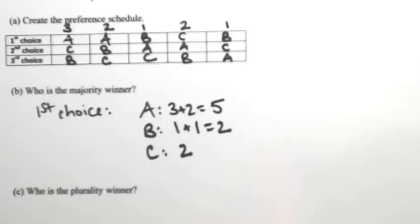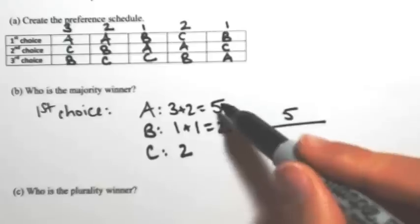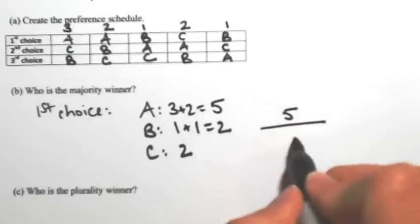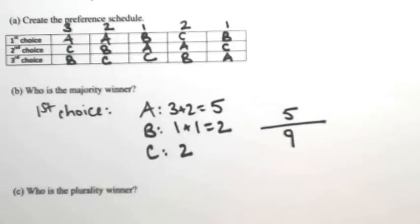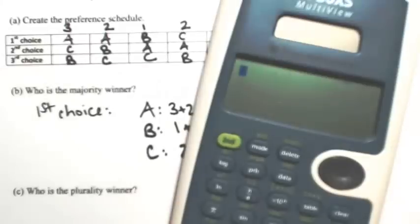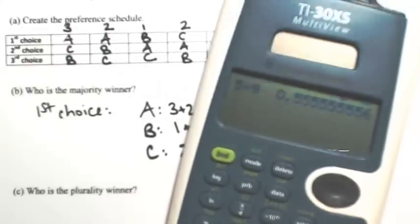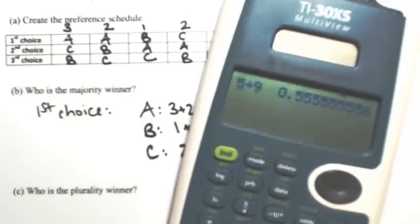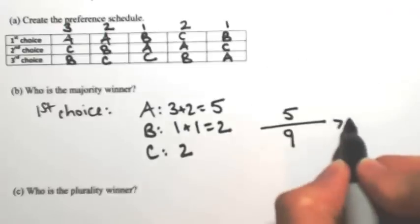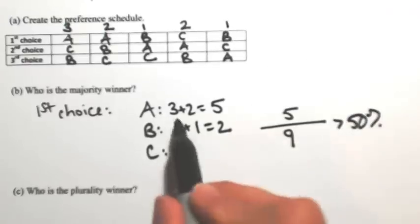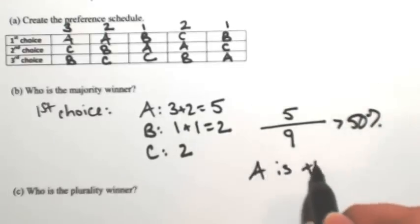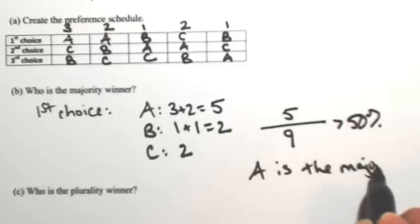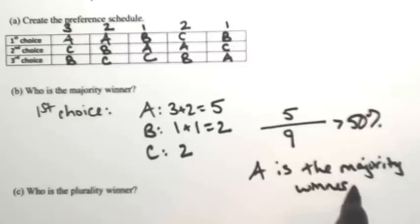The person with the most first choice votes is A with five. Let's see if that's the majority. We take five and divide it by the total number of voters, which is five plus two plus two — in other words, nine. Five divided by nine is about 55.6%, which is more than 50%. So A, Allison, is the majority winner.